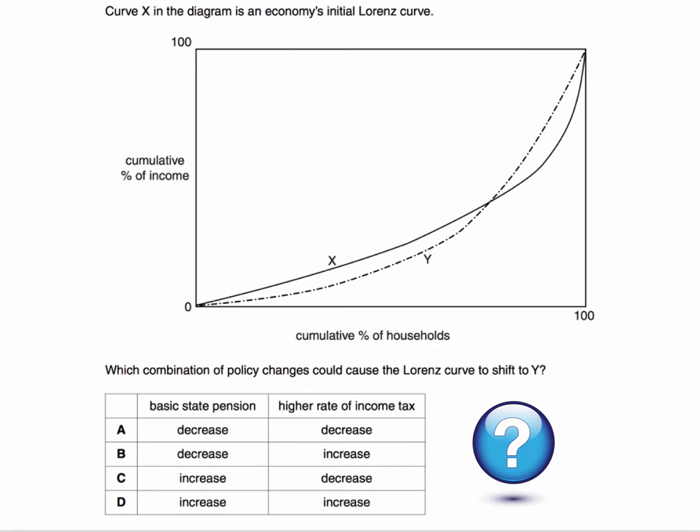Two policy changes in the question: the basic state pension and the higher rate, or the top rate, of income tax. What do you think the answer is? Press the pause button. I'll be back in a few seconds with the right answer and the explanation.